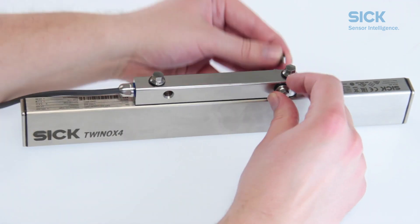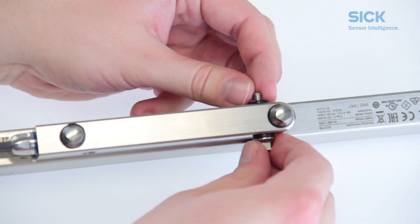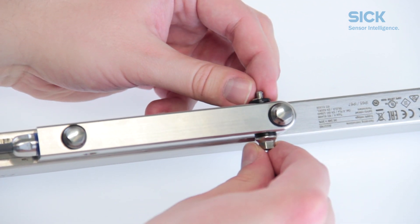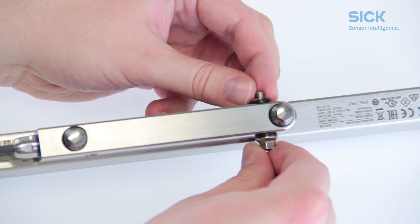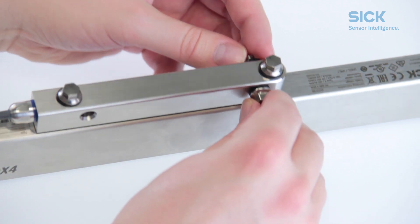Now, put the other pair of ball sockets and seals back on. Note that the two ball sockets need to oppose each other so that the light curtain can be adjusted later on.